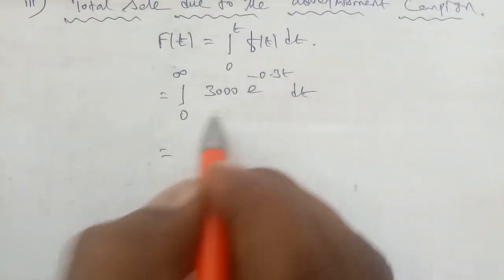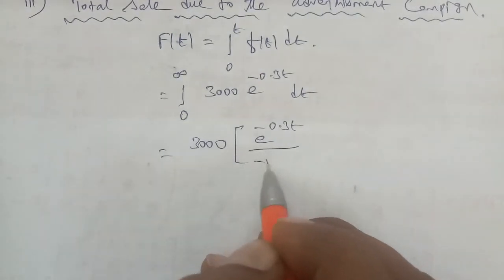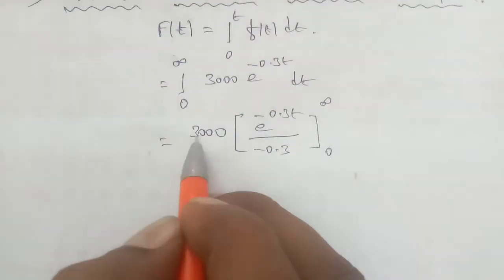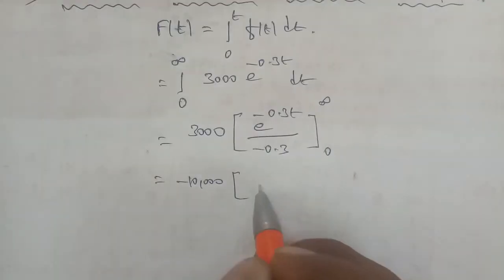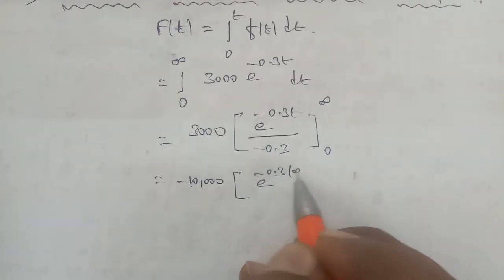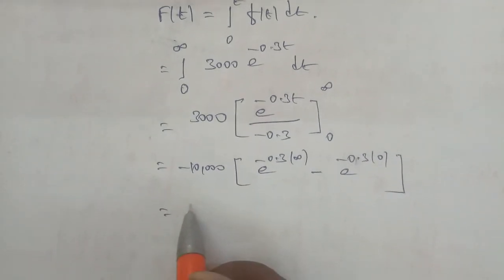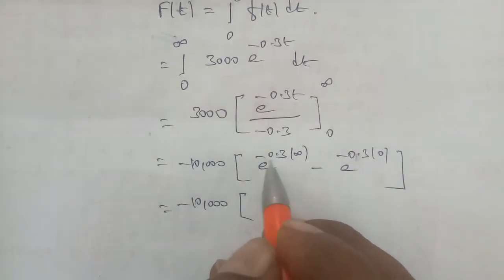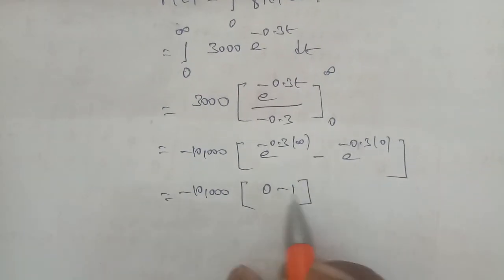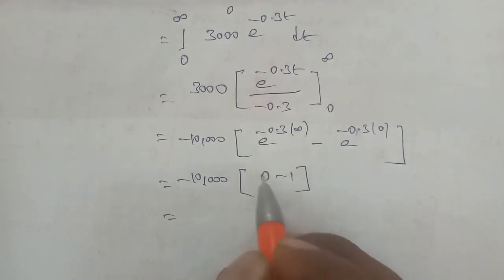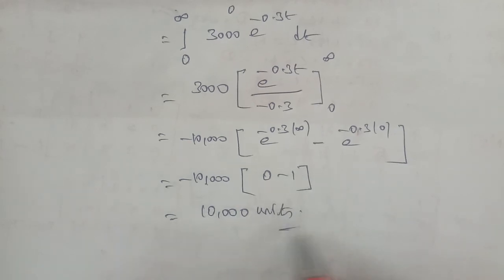3000 is a constant, so the result is 3000 × [e^(-0.3t) / (-0.3)] from 0 to infinity, which gives minus 10,000 × [e^(-0.3t)] from 0 to infinity. Applying limits: e^(-0.3×∞) = 0, and e^(0) = 1. So: minus 10,000 × (0 − 1) = minus 10,000 × (−1) = 10,000 units. The total sales due to the advertisement campaign is 10,000 units.